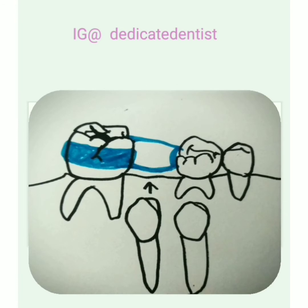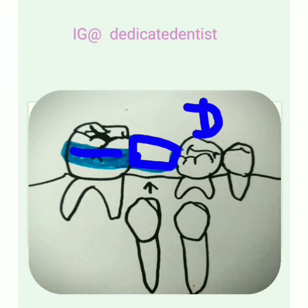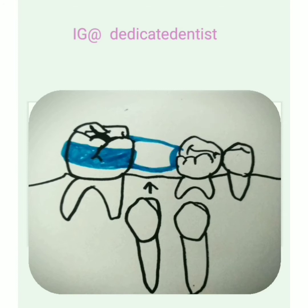Here, the deciduous first molar D and E has fallen off or was extracted because it was carious. There is no deciduous second molar and the permanent first molar has erupted. We give a space maintainer — the blue band you see — because teeth have a natural tendency to move in a mesial and occlusal direction. The space maintainer keeps the space for eruption of the premolar, so the first molar doesn't drift mesially into the extraction site.